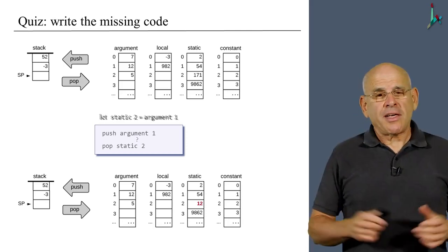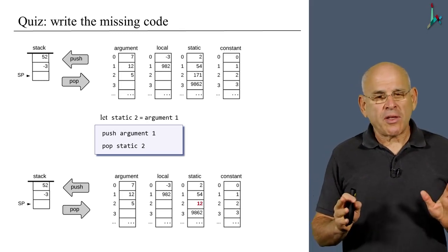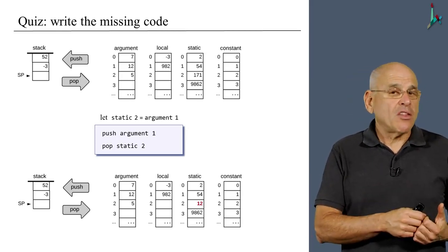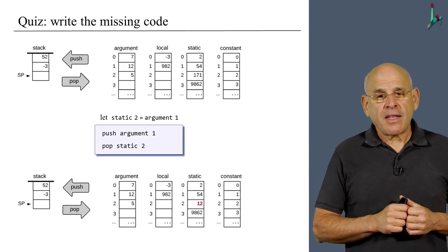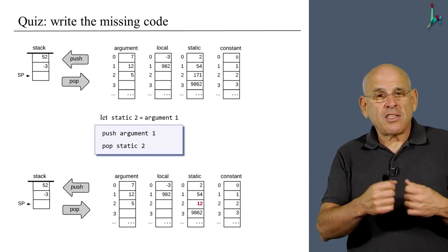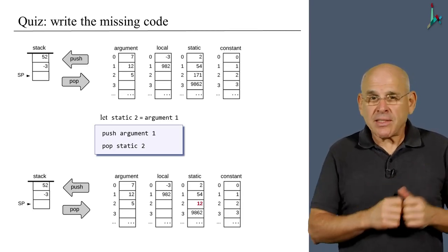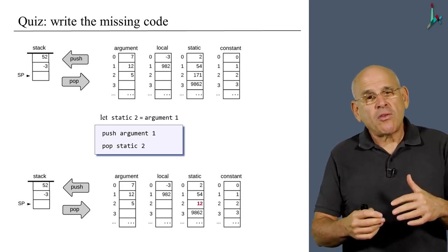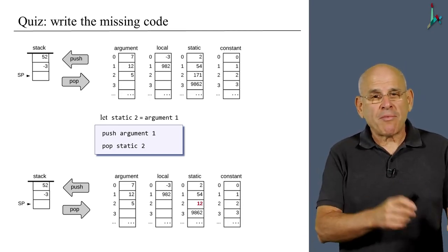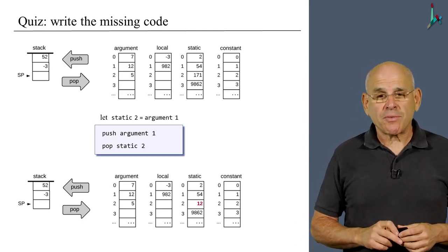Here's the answer. In order to move the value of argument1 to static2, we must go through the stack — that's the only way to do it in a stack machine. So we push argument1 onto the stack, and then we pop the topmost value onto static2. Because these two commands cancel each other stack-wise, the stack remains the same. A lot of drama happened — we added something, took something away — but the stack is intact, and we managed to move a value from one segment to another. That's the only way to move values between segments in our VM abstraction.